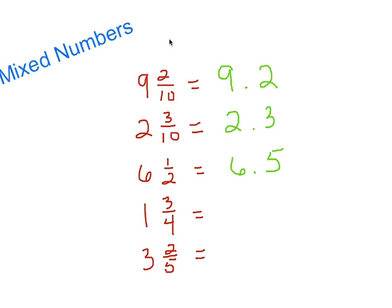Six and a half: if I have six dollars and half of another dollar, that's 50 cents — so six and a half equals six point five, or six and five-tenths. For one and three-fourths: remember, fourths are quarters. Three out of four quarters is seventy-five cents, so that gives us one point seven five, or one and seventy-five hundredths.